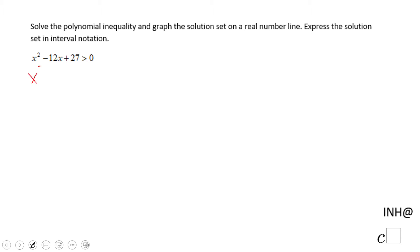The first thing you want to do is make this polynomial inequality into an equality. Make it equal to zero to find out when it equals zero.